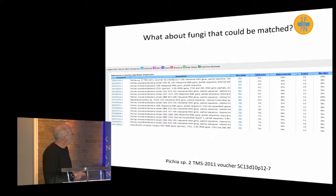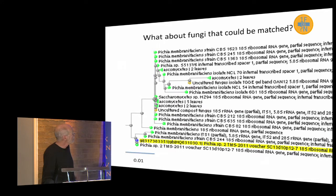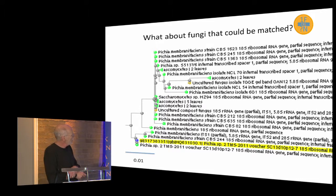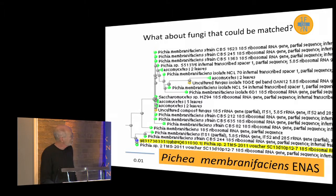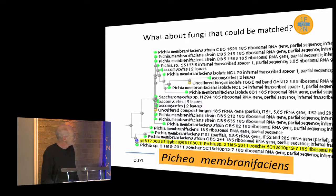And finally, here's Pichia — one of the ones we found in our search. If you make the tree, it's nested with Pichia membranifaciens all the way out. I think you're pretty safe giving it a species name — does it even have to be an ENAS? It's probably Pichia membranifaciens.